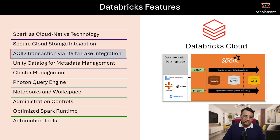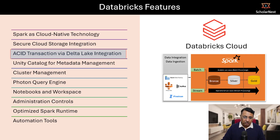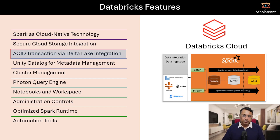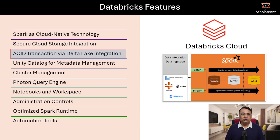ACID compliance is one of the most desired features of any data system. There is an open-source project called Delta Lake, which is designed to give these capabilities to a variety of distributed data processing systems. Databricks integrates Delta Lake with Apache Spark, combines them together, and offers it as a pre-integrated, ready-to-use solution on the Databricks platform.